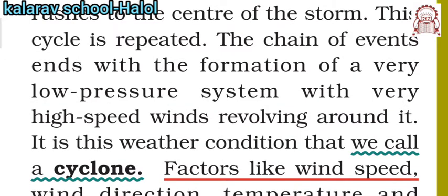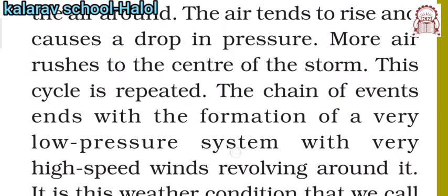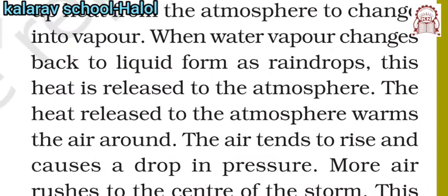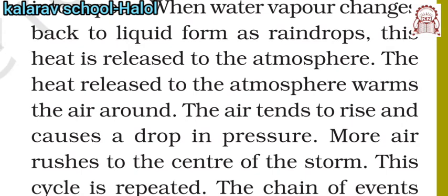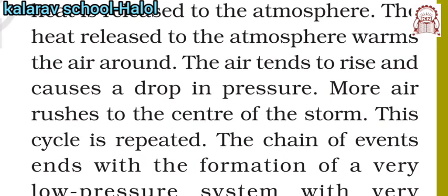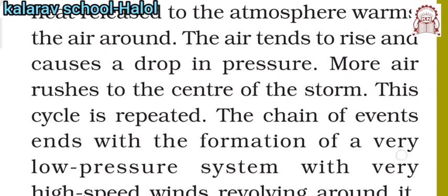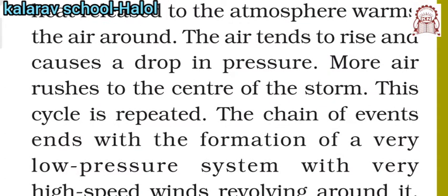The key point is: when wind takes heat from the atmosphere, it changes into vapor and goes up. After some time it releases its heat and comes back to the surface as raindrops. The heat released makes the winds warm and tends to cause a drop in pressure, so more air rushes at the center. As this cycle repeats continuously, a chain of events leads to the formation of very low pressure.